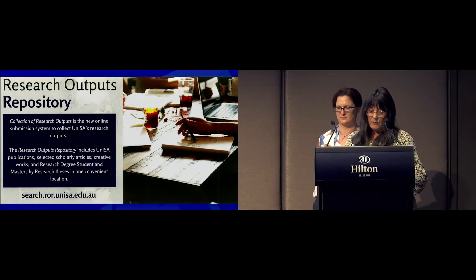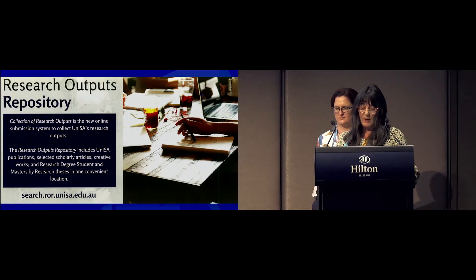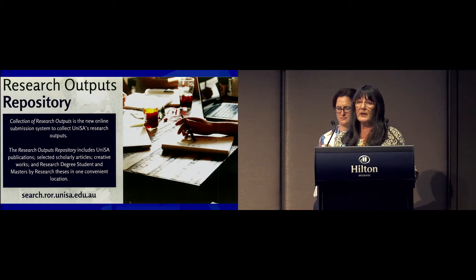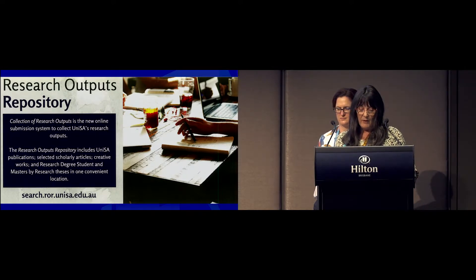The Research Outputs Repository contains a wide range of research outputs, including journal articles, book chapters, conference papers, reviews, reports, patents, and so on, as well as a few selected scholarly articles and creative works including paintings, sculptures, photos, and digital works, as well as research degree theses. There are currently approximately 62,000 records, including some metadata-only records. We now have a strong focus on comprehensive collecting of research outputs and facilitating open access, as well as a strong focus on process improvement.